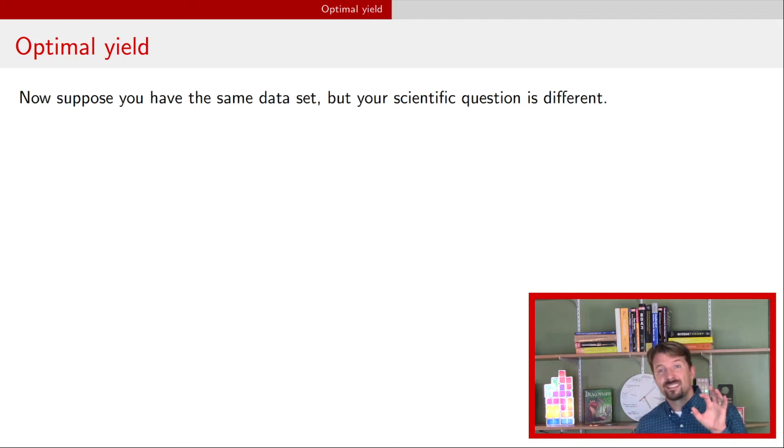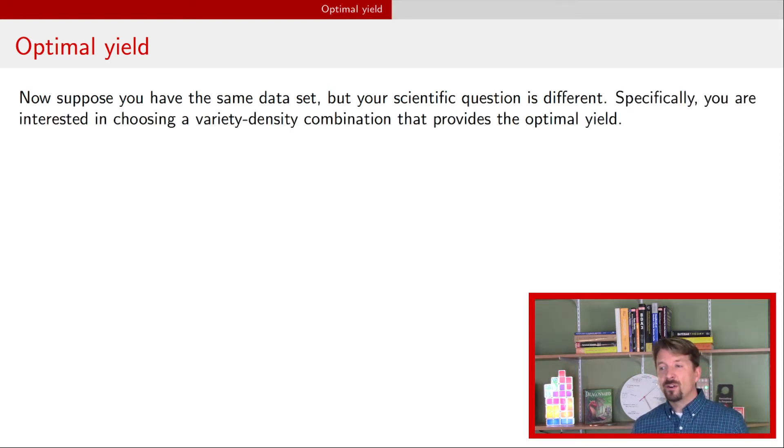And now we're going to take that same experiment but we're going to think about the question, well how do you find a particular variety density combination that provides the optimal yield?